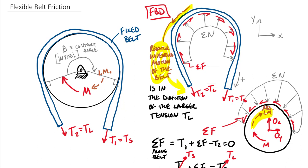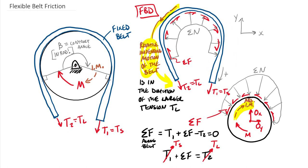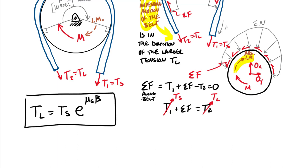You can certainly think through the free body diagrams, but either way you need to be able to tell the larger tension from the smaller. In the textbook there's a full derivation, which comes from taking a small segment of the belt, creating a free body diagram, and looking at the differential tension on either end relative to the amount of friction along that surface.